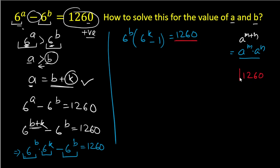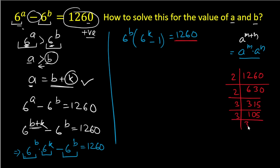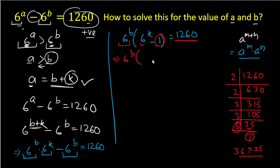We now factorize 1260. Dividing: 1260 ÷ 2 = 630, ÷ 2 = 315, ÷ 3 = 105, ÷ 3 = 35, ÷ 5 = 7. So the prime factorization gives us two useful factors: 36 and 35, since 36 × 35 = 1260.